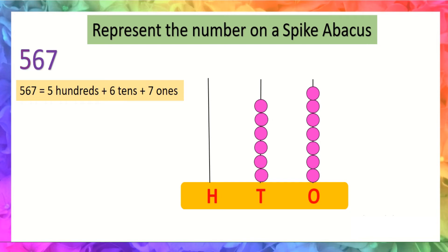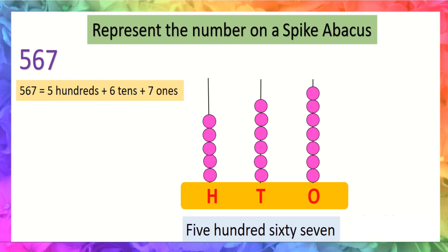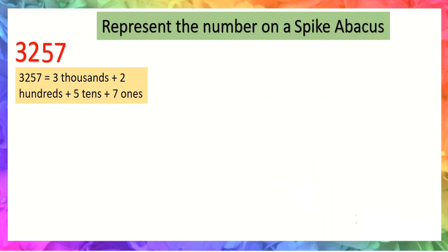At hundreds place the digit is five, so we will draw five beads: one, two, three, four, five. Now represent the number in words: 567.